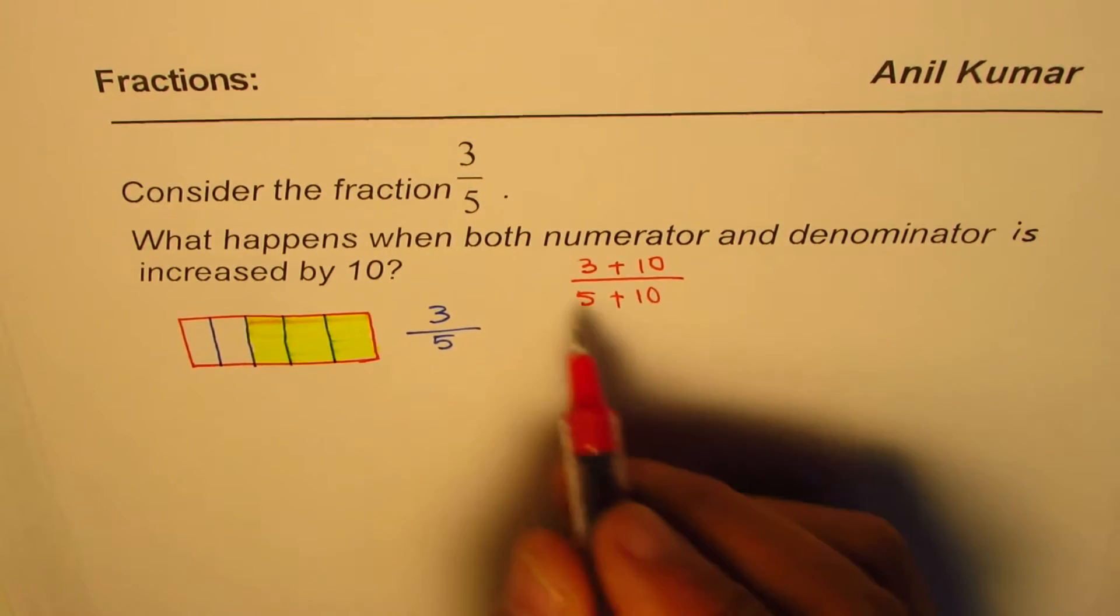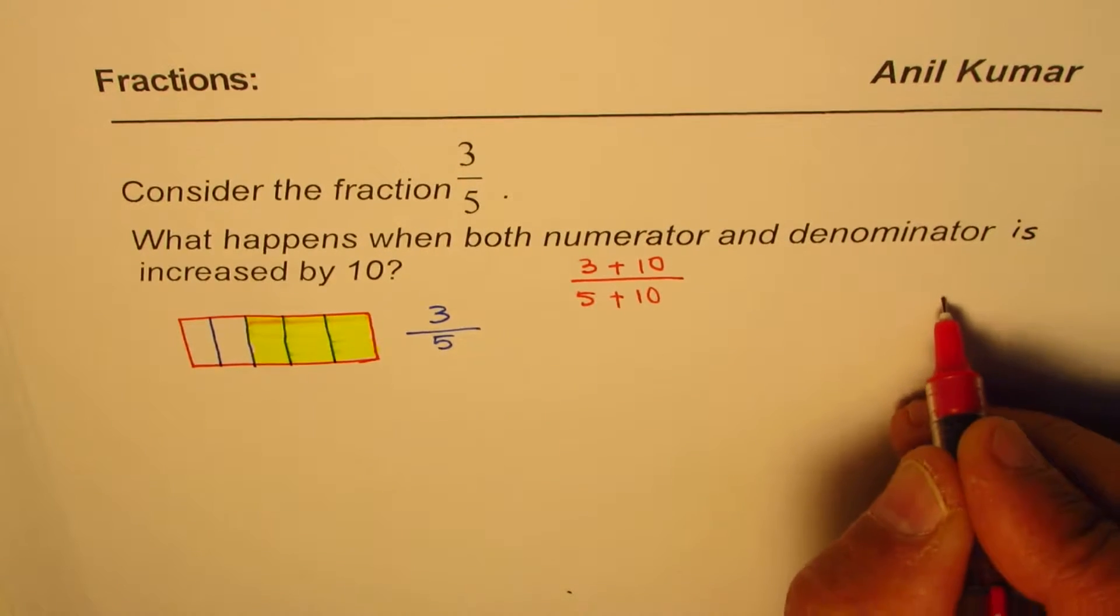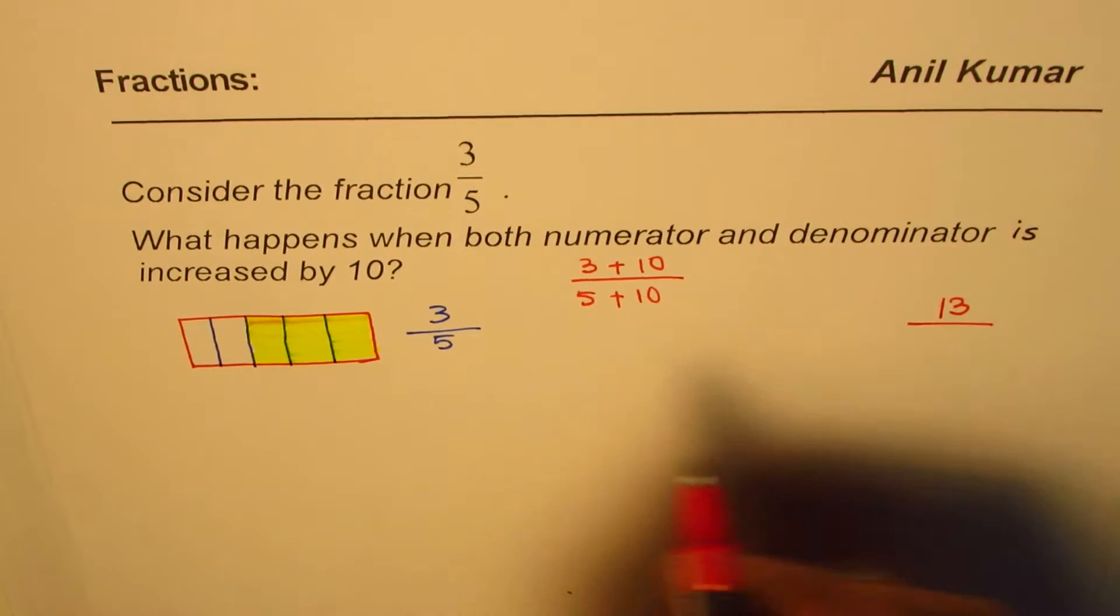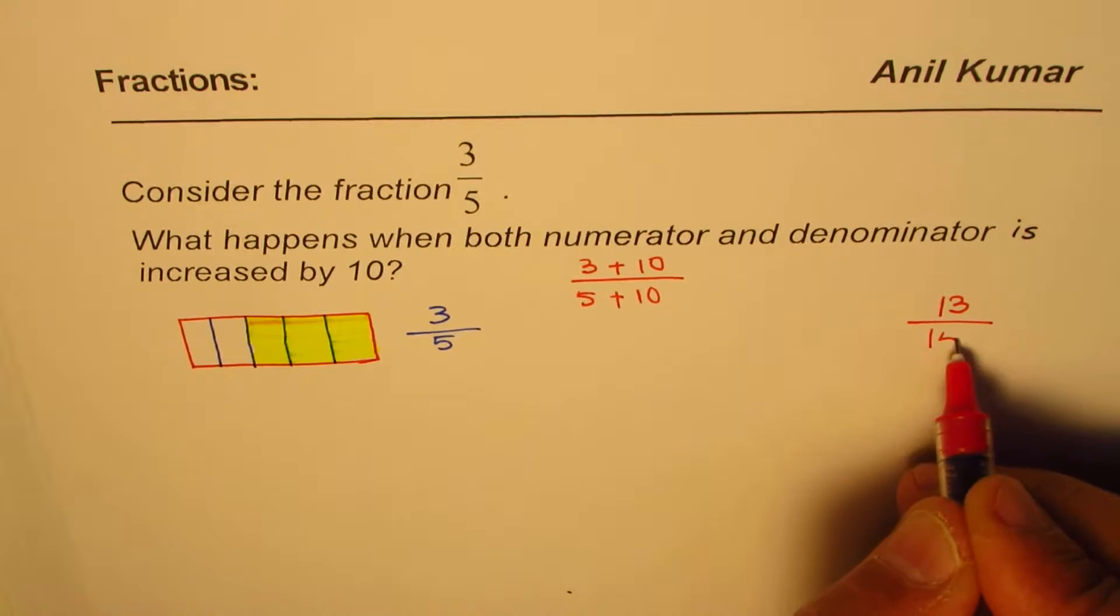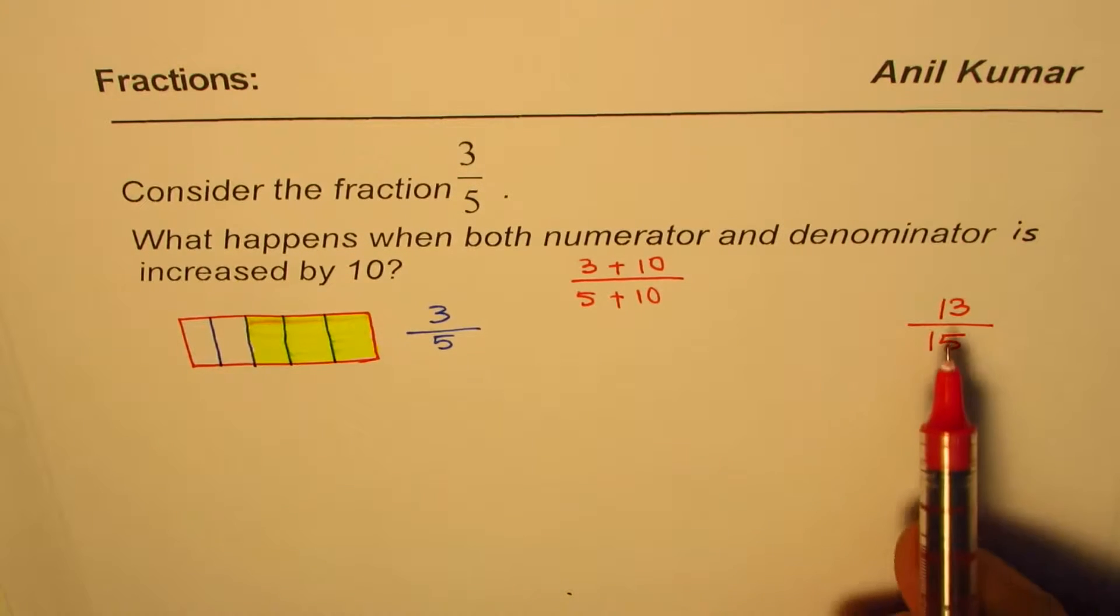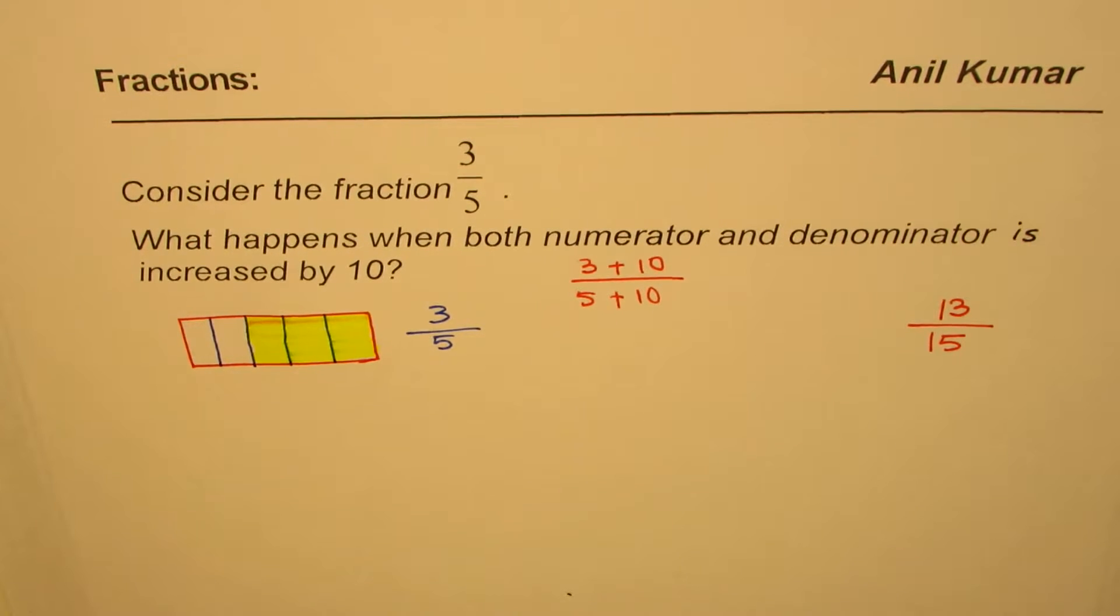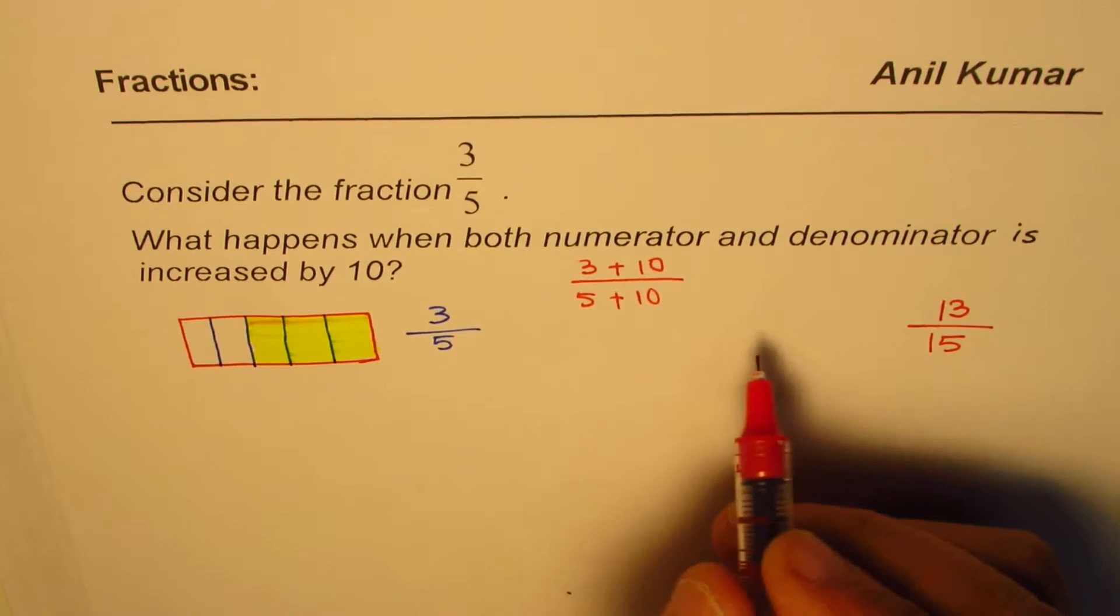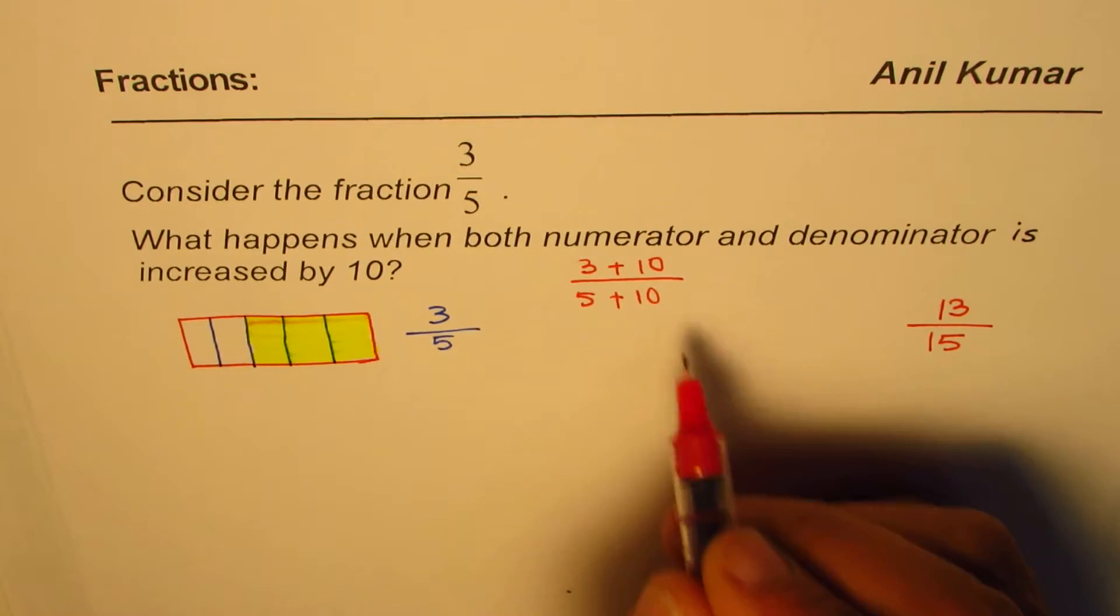So 3 plus 10 is 13, so we have 13 on the top and 5 plus 10 is 15. So we have that situation. So what happens when it is 13 over 15? Okay, so let me again make the same chocolate bar. So let me do just, okay, let's make new one here.